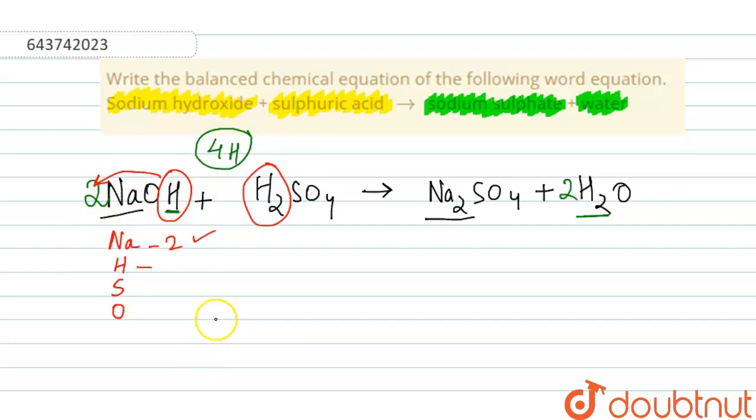Hydrogen, four on both sides. Then we have S. S we can see one on both sides, so it is balanced. And this oxygen, we see we have two oxygen atoms here and four, that means six over here. Also we have four over here and two over here, that means six. So six oxygen atoms on both sides.